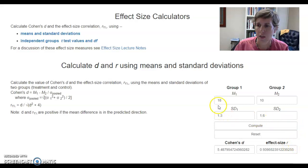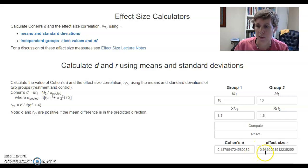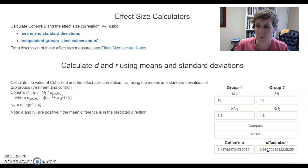So I've got 18 and I've got 10, standard deviation, and so forth. This is data that I'm just coming up with, and here we have an effect size of 0.939. That's a very large effect — a huge effect that's going on here.